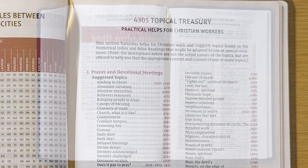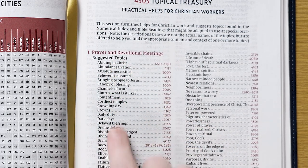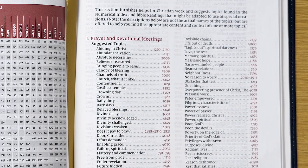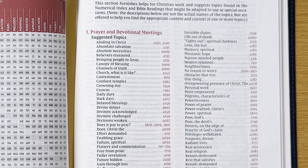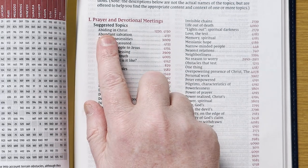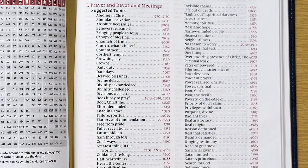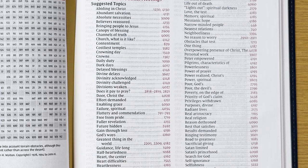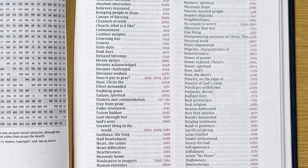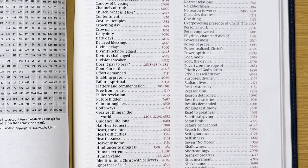This is a list that provides help for Christian workers and includes lots of topics for ministry and personal growth. Let's look at the first one: Prayer and Devotional Meetings. It lists 117 suggested topics that are great for group discussion.